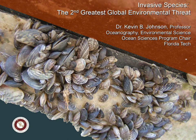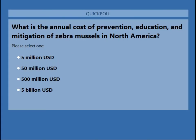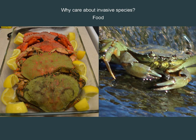These are quagga or zebra mussels that are a problem in North America, particularly in the Great Lakes region. I want to ask: what do you think is the annual cost due to zebra mussels in North America, particularly the Great Lakes region? Choose one of these answers and we'll revisit that in a few slides.